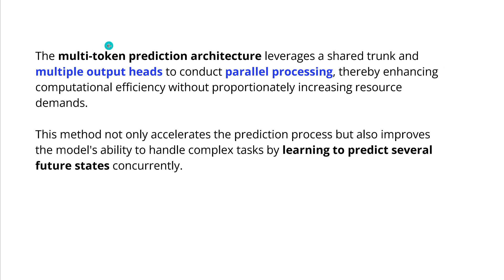So we move now from a single token prediction on an autoregressive transformer architecture to a multi-token prediction with multiple parallel output heads, parallel processing, enhancing computational efficiency. It takes a lot of training and optimization. This is not the first study to go to multi-token prediction, but it is the latest, just published. The idea is we can now go for local patterns and improve our reasoning capabilities, because we do not predict the next token — which might be part of a word — but we predict more complex four-token patterns, learning to predict several future states concurrently.